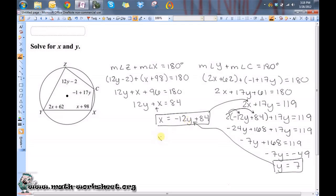So X equals negative 12 times 7 plus 84. So X equals negative 12 times 7 is 84, so negative 84 plus 84. So X equals 0. So the answer is X equals 0 and Y equals 7.